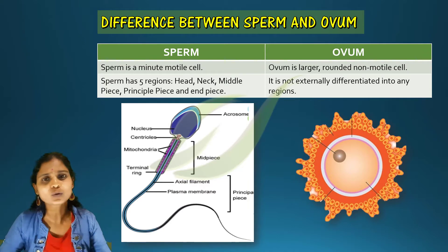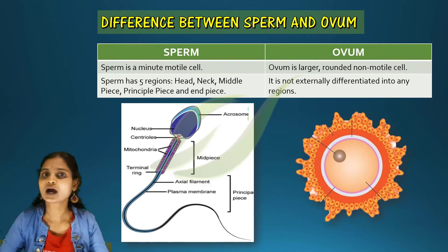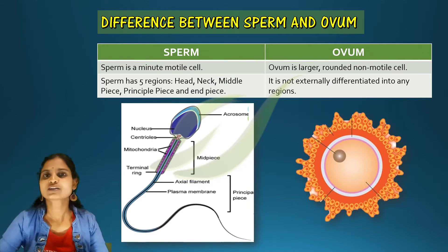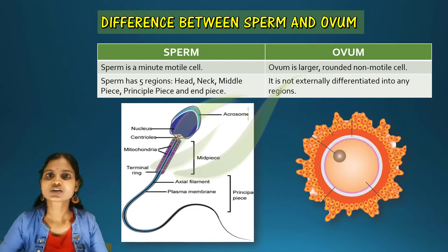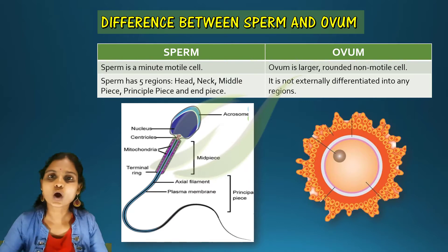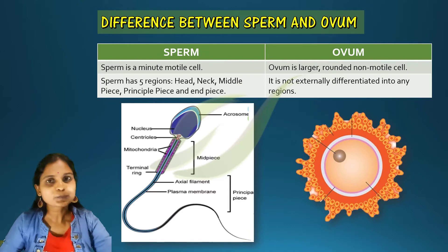Sperms are minute and microscopic in nature and they are motile, whereas the ovum is large, rounded, and non-motile.